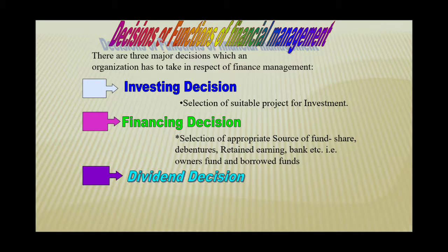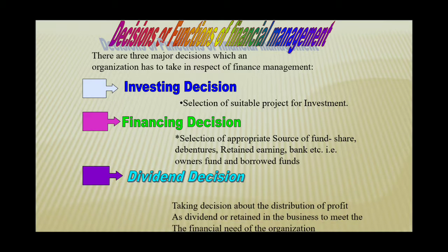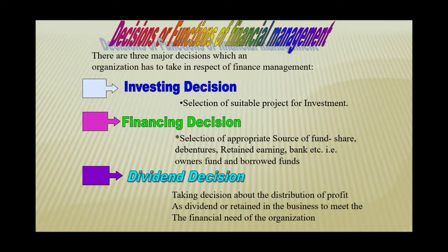The third is the dividend decision. The dividend decision is concerned with taking a decision about the distribution of profit as dividend, or retaining it in the business to meet the financial needs of the organization. How much part of profit should be distributed as dividend to shareholders, or how much part of profit should be retained in the business for the purpose of reinvestment.